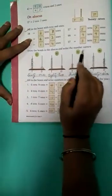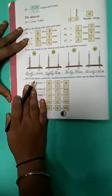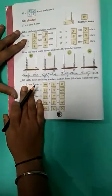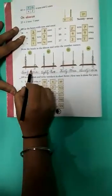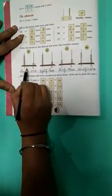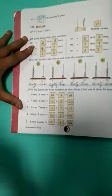Your second question is draw the beads in the abacus and write the number name. Means here you have to draw the beads. And also you write their name in words. So, here you see. Your question is 61. Here also you see here given 1s, here given 10s.